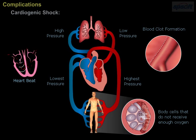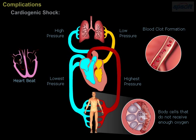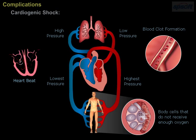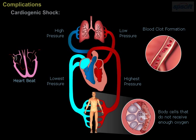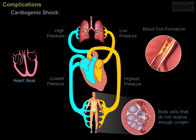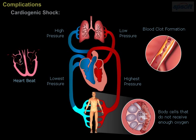Blood clot formation. Blood clots are formed when there is damage to the blood vessels. Internal clotting will stop the flow of blood to the heart and other organs of the body. Such irregular blood flow will cause irregular heartbeats called arrhythmia.